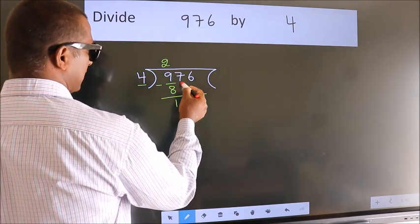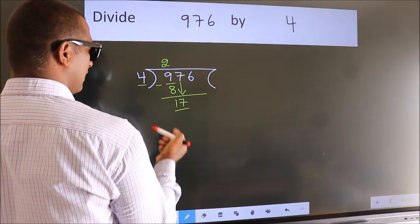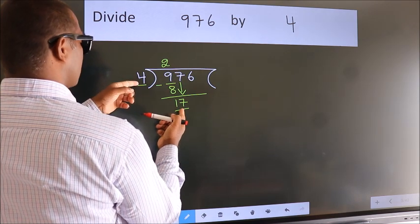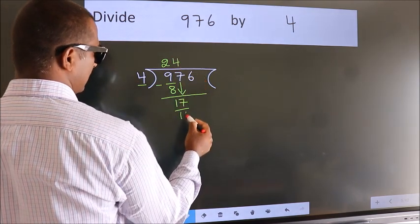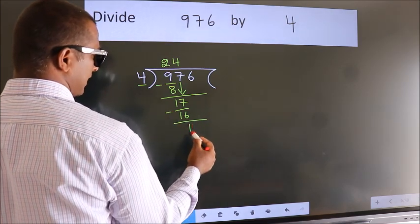Now, after this, bring down the beside number. So, 7 down. So, 17. A number close to 17 in 4 table is 4 fours, 16. Now, we subtract. We get 1.